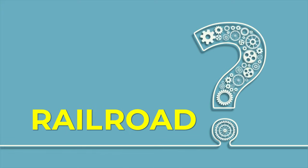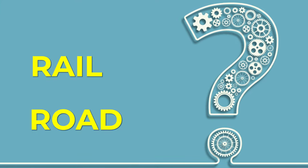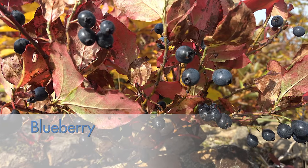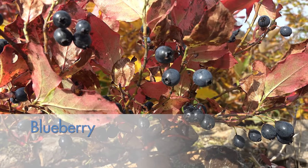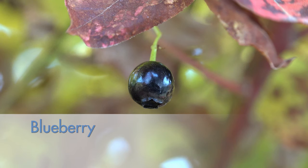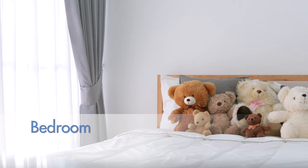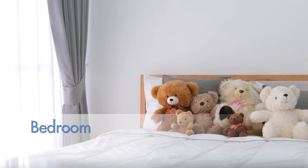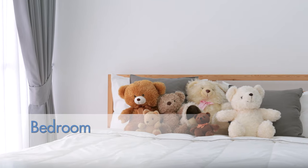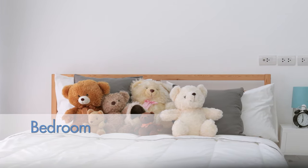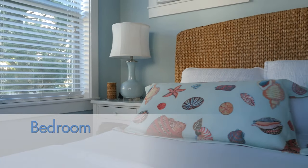Separating compound words into smaller words can help you define the meaning of a compound word. Look at the word blueberry. If you separate that word into two smaller words, you get the words blue and berry — or in other words, a berry that's blue. How about the compound word bedroom? Separate that into two words and you get bed and room, or a room with a bed in it.